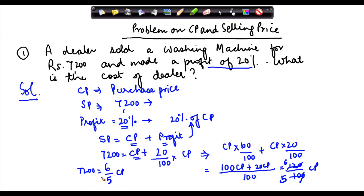What if I multiply both these sides by 5? So 6 upon 5 into 5 times CP is equal to 7200 into 5.